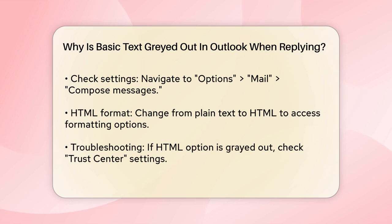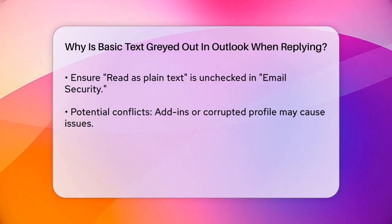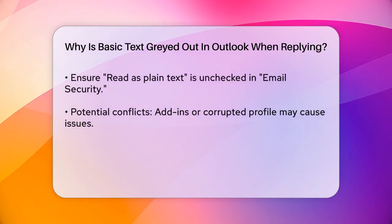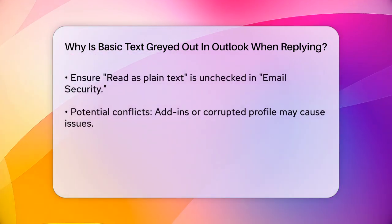Here's how you can do it. When composing or replying to an email, look at the format section in the ribbon. If it says plain text, you need to change it to HTML. To do this, go to Options, Mail, Compose Messages, and select HTML if it's available.